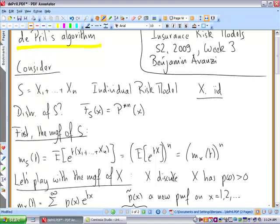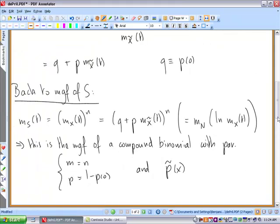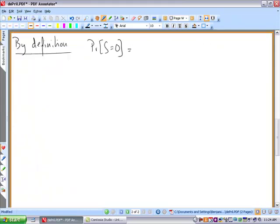This is the probability that each of the X's will be equal to zero.